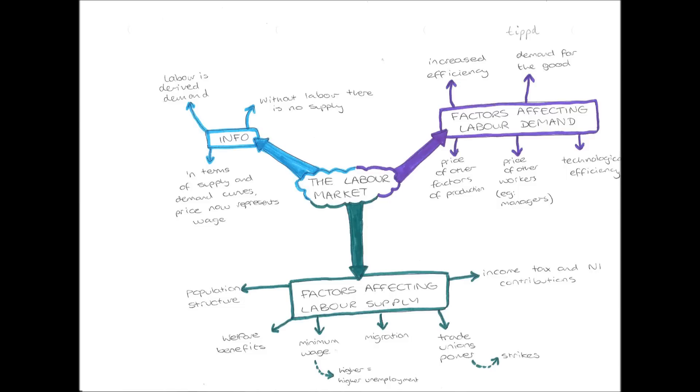Also if income tax and national insurance contributions are high as well, that means that you're going to be taxed more on the amount of money you earn. So therefore overall at the end of the month, you're left with less money. And if this amount of money is close to the amount you could be earning through welfare benefits, through unemployment benefits, you'll say well what's the point in working for an extra £200, when I could be doing nothing and take unemployment benefits. So if income tax and national insurance contributions are high, then less people work, therefore the supply of labour will be low.